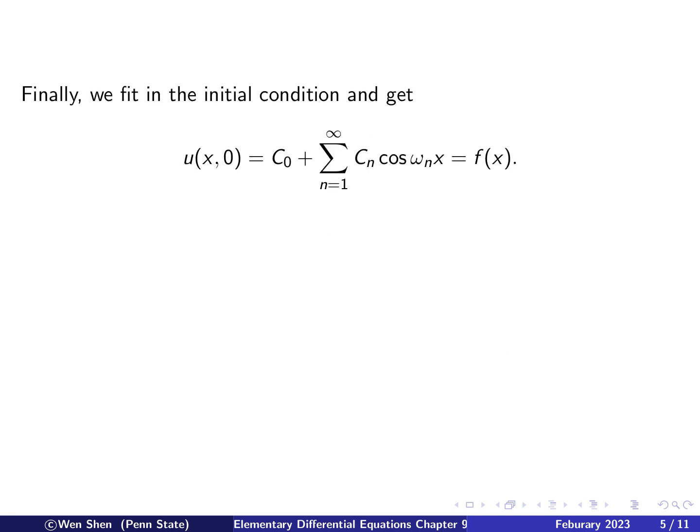So in fact that is what we will use to find the constants c_0, c_1, c_2 and so on. So putting the initial condition, we see that we have this Fourier cosine series which should match f of x.